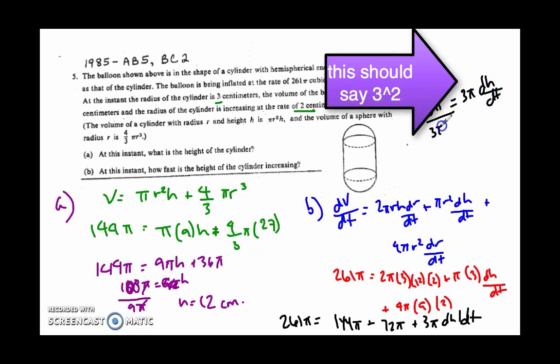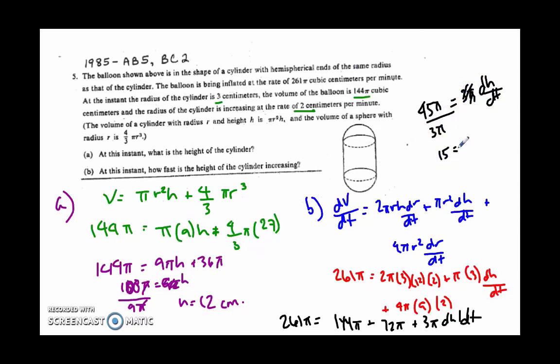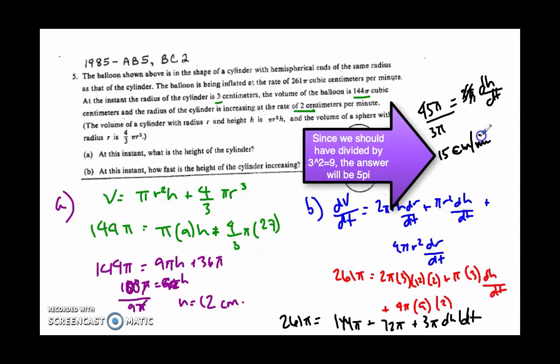And I'm going to have to set that equal to 3 pi dh dt, and then divide by 3 pi on both sides. And my answer is going to be 15, which will be in centimeters per minute.